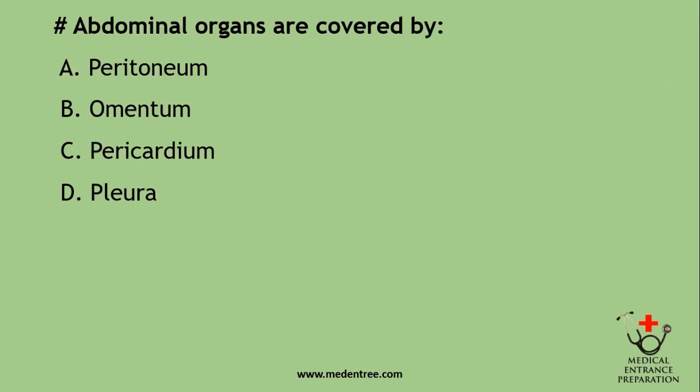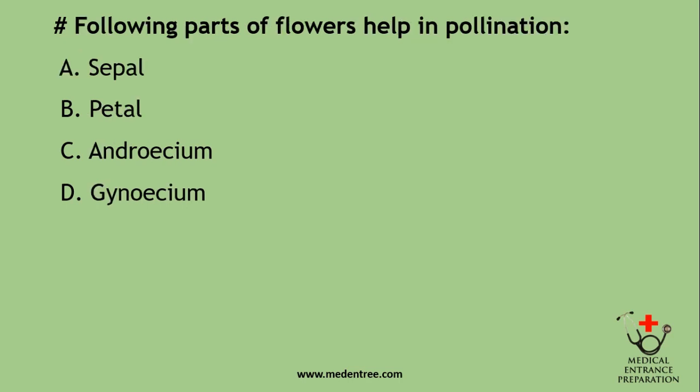Abdominal organs are covered by: peritoneum, omentum, pericardium, or pleura? The correct answer is peritoneum. Pericardium is the outer covering of the heart and pleura is of the lungs. Omentum is the intestinal covering. Which of the following parts of flowers help in pollination? Sepal, petal, androecium, or gynoecium? The parts helping in pollination are the petals because they are colorful and attract insects, which help in pollination.